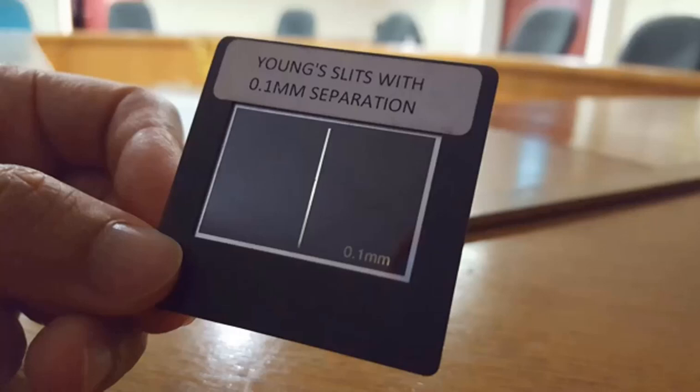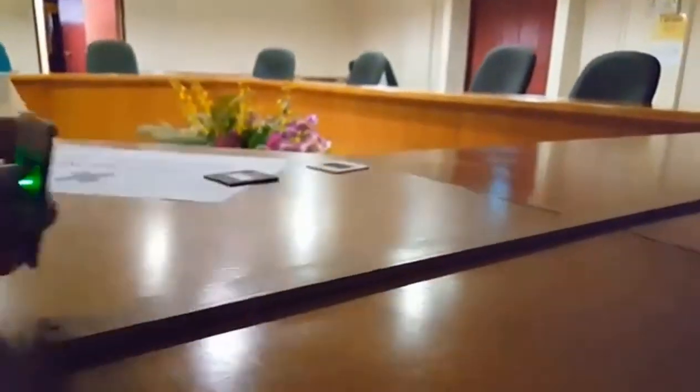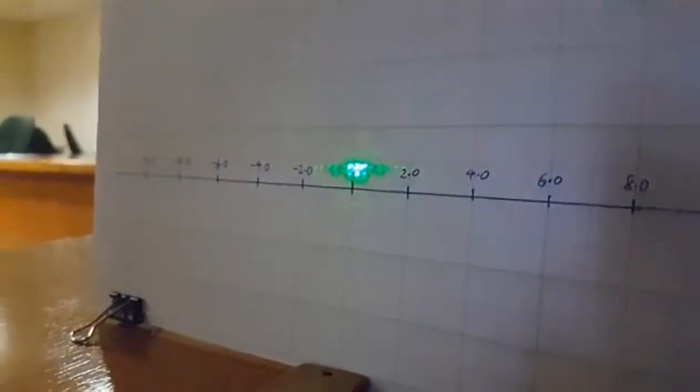Hello people. If we shine a laser beam through two very narrow slits, what do you expect to see on the other side? Do you expect to see two very narrow fringes?